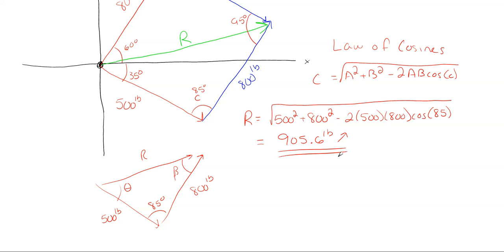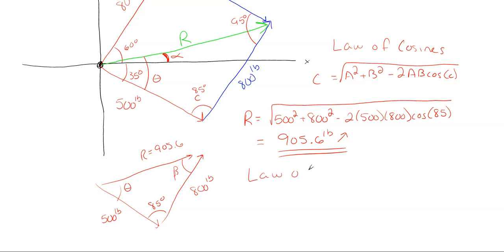Now that we've found the resultant magnitude, we also need to locate it — typically measured as an angle from the x-axis, which we'll call alpha. From the bottom triangle, the angle theta is between the resultant and the 500-pound force. Since the 500 is 35 degrees from the x-axis, if we find theta, we can get alpha. We now know the resultant side of 905 and its opposite angle, so we can use the law of sines to solve for theta.